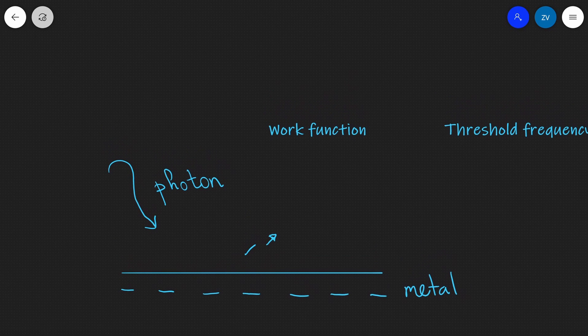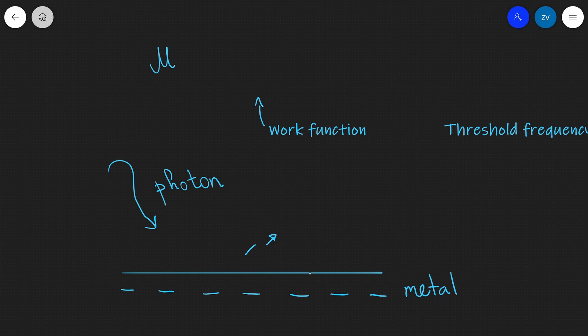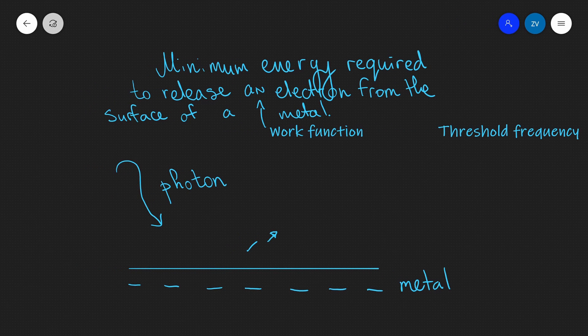This is really, really important, and in fact, we should write this over here. So, this is the minimum energy required to release an electron from the surface of a metal.